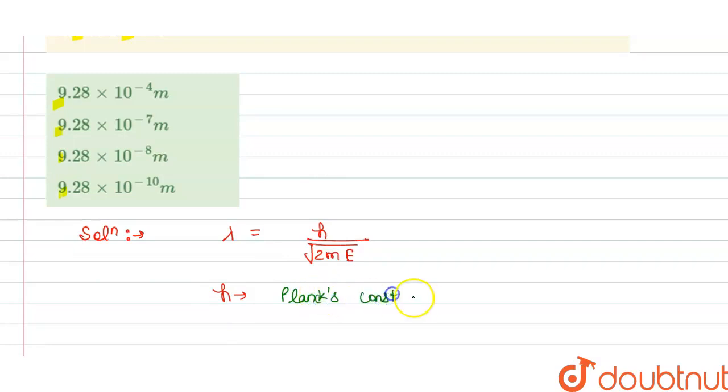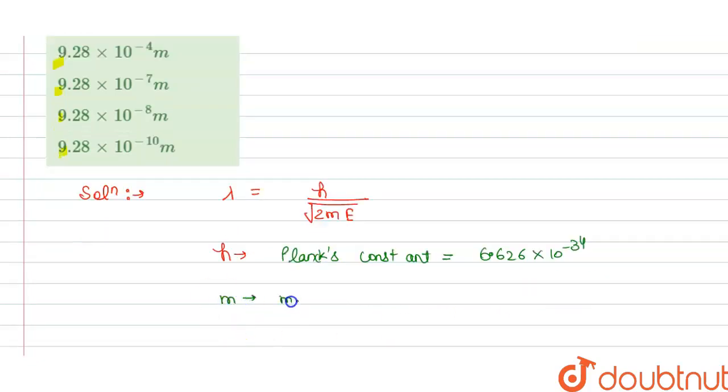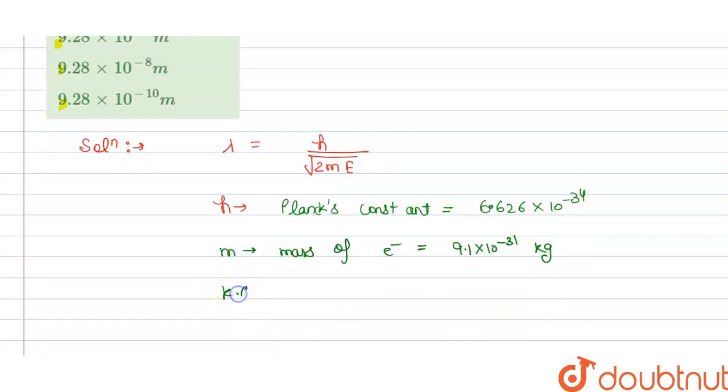H is our Planck's constant and it has the value of 6.626 into 10 power minus 34. And we have the M is mass of electron that is 9.1 into 10 power minus 31 kg and we have the kinetic energy that is E equals to 2.8 into 10 power minus 23 joule.